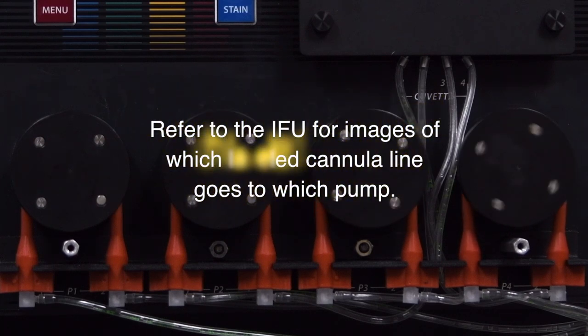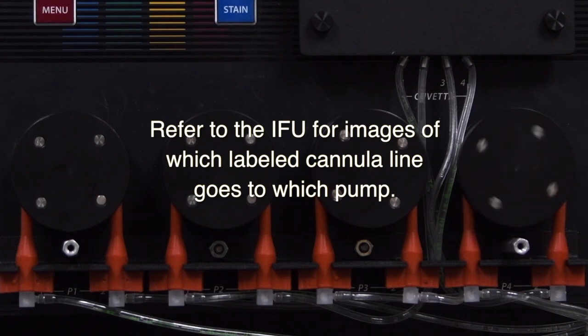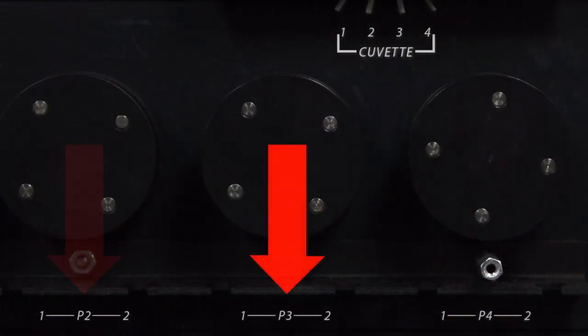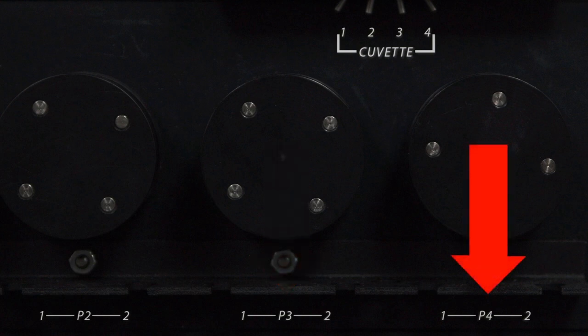Refer to the IFU for images of which labeled cannula line goes to which pump. There are numbers below the metal connectors that will clarify which pump roller it is responsible for.